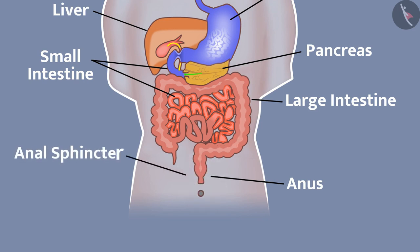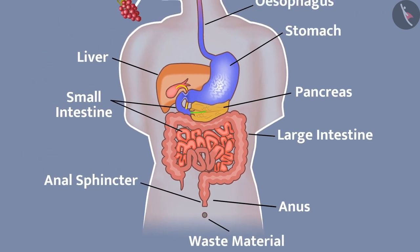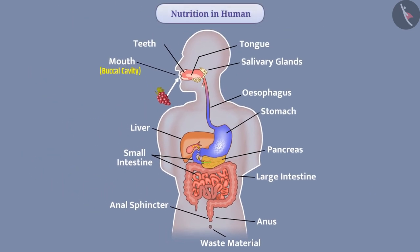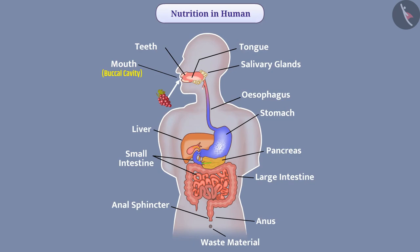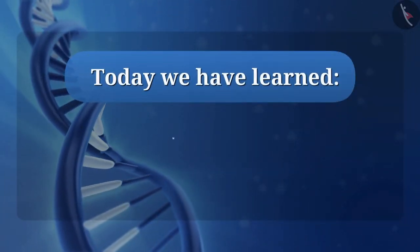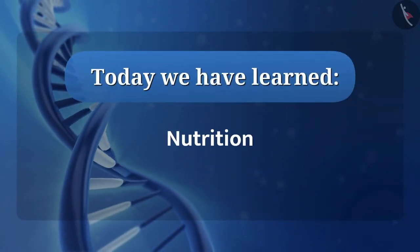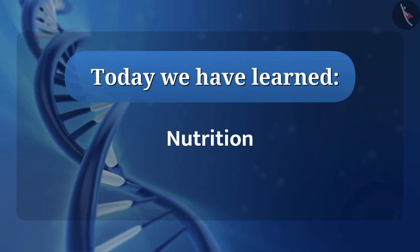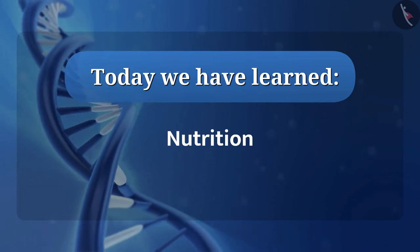The anus sphincter regulates the exit of waste material. So today we have learned what nutrition is and what are the different types of nutrition.